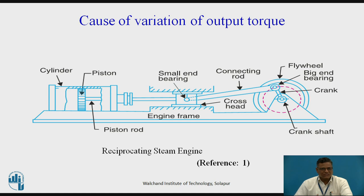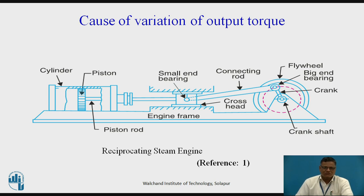In a reciprocating steam engine, steam is generated outside and its expansion moves the piston. Depending on whether it is double-acting or single-acting, the piston motion varies. The power stroke is intermittent and not continuous, and even during the power stroke the speed varies because the steam pressure varies.